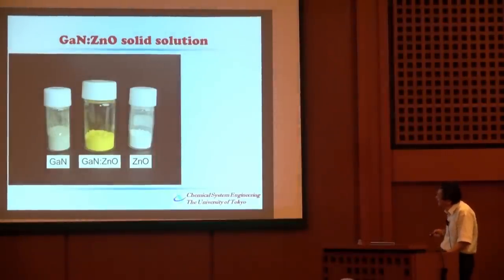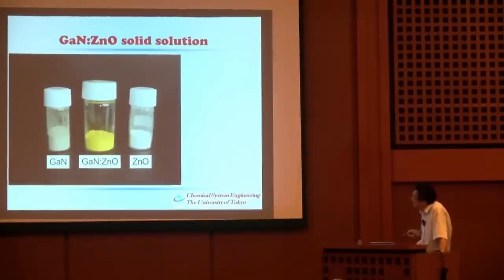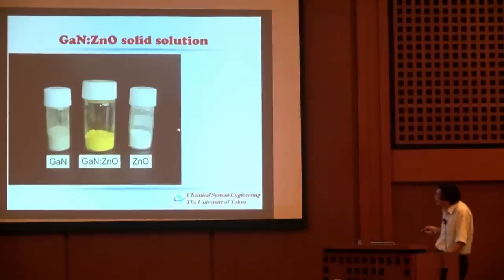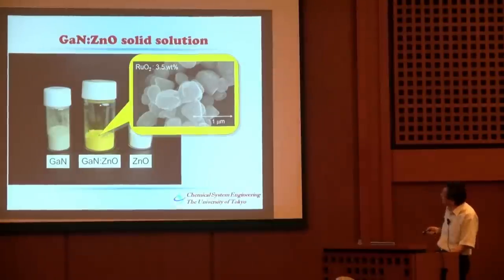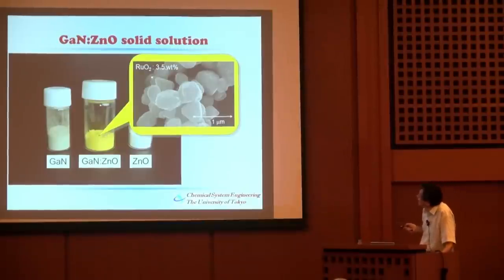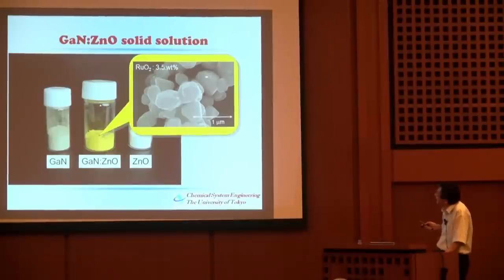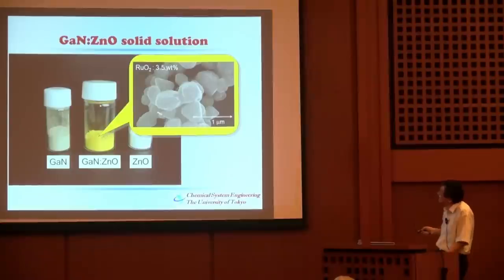Here is a photograph of this material. GaN powder should be white, though our purchased Mitsubishi Chemical sample appears gray due to residual gallium metal. ZnO is white. But the GaN:ZnO solid solution gives a yellow-colored powder. The SEM image shows particles of a few hundred nanometers. In this case we have already loaded 3.5 wt% ruthenium dioxide as co-catalyst — small particles dispersed on the GaN:ZnO solid-solution particles.